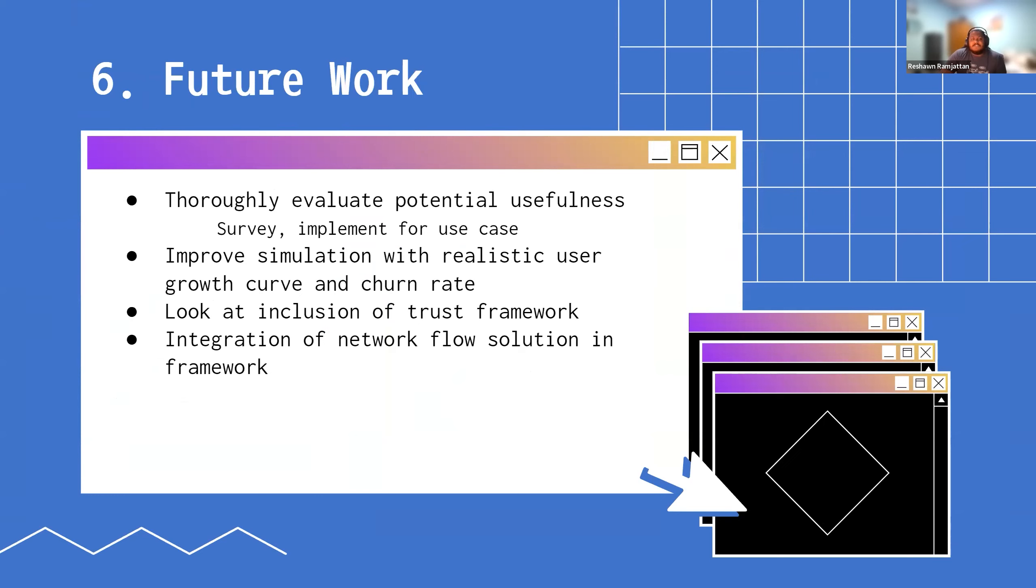In terms of future work or routes for improvements, we think it can be useful to implement for a single use case and get the feedback of real people on how effective or useful this is for that. Another option is to improve the simulation by making it more realistic, looking at the growth curves, the churn rate, that kind of stuff. Another important aspect when it comes to forming groups, especially for in-person events and parties, is trust. These features that we've defined or that will be defined for a particular use case are great, they're helpful, they're useful, but if you know someone that's going to an event, some mutual friend, that would probably change how much you consider certain features. So looking at the inclusion of trust into this framework is also another important step. Shiva and Prof did work in this area as well, so that exactly what they did would be a good fit to go into this.